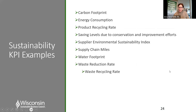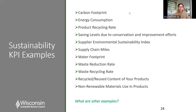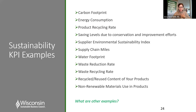Some examples of KPIs on here are carbon footprint, energy consumption, product recycling rate, savings levels due to conservation improvement efforts, supplier environmental sustainability index, supply chain miles — tracking how far our supplies are coming from — water footprint, waste reduction, waste recycling rate, landfill diversion rate, and recycled or reused content in products. For product manufacturers: non-renewable materials used in products. One participant shared they're tracking energy consumption, water, and waste reduction — great place to start, those are the big three.